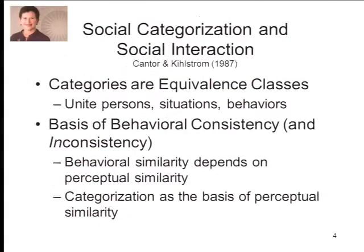Within the social domain, social categorization has to do with developing equivalence classes in the service of social interaction. Once we've categorized somebody as one kind of person, once we've categorized some situation as one kind of situation, once we've categorized some action as some kind of action, then we know what to do. We have some idea about how we're going to behave. And in most models of categorization, categorization is based on similarity of objects — I see two things as similar, I assign them to the same category.